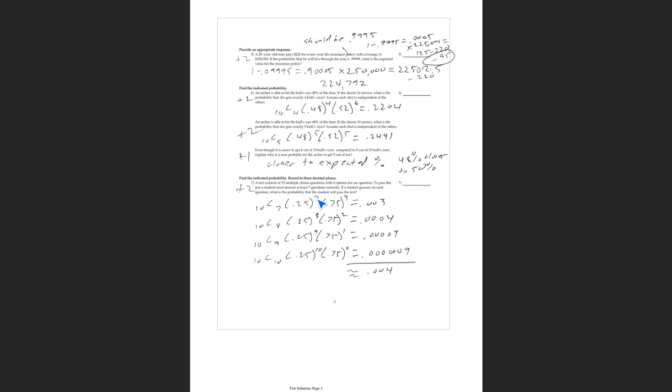There are different ways to get seven out of ten right — you could get the first seven right and miss the last three, or get the first six right, miss one, get the next right, and so on. The 10C7 accounts for all the different ways you could get seven correct and three wrong. The probability of success is only 25% because it's one out of four; the probability of getting it wrong is 75%. If you calculate that in your binomial calculator you get about 0.003.